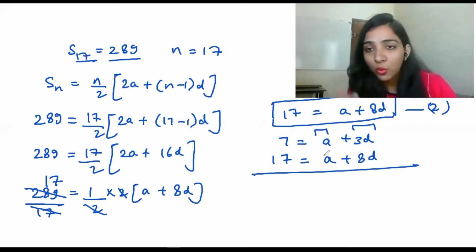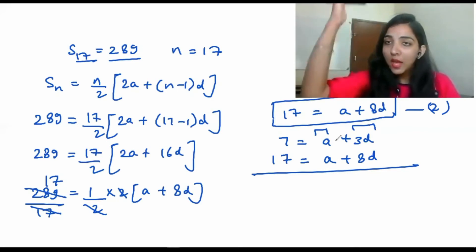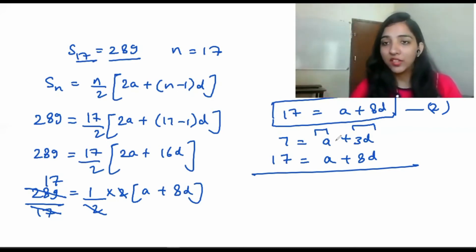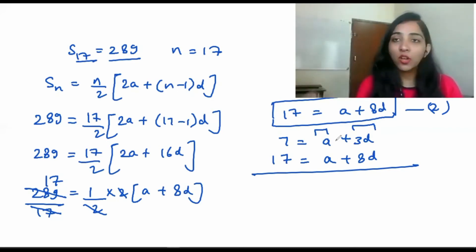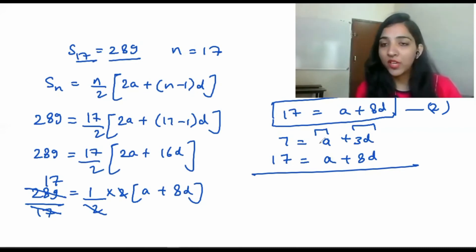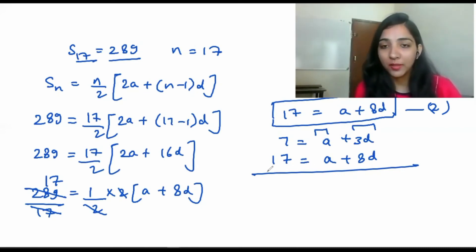We need to cancel out one variable. We will cancel out a by subtracting one equation from the other, so that we can isolate d and find its value.